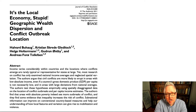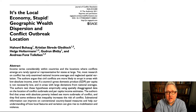Blattman and Miguel point to something interesting in the conflict literature, something that we briefly mentioned last week, but I wanted to spend a bit more time on now, namely that there are two main levels of analysis in the conflict literature: that at the state or group level, and at the individual level.